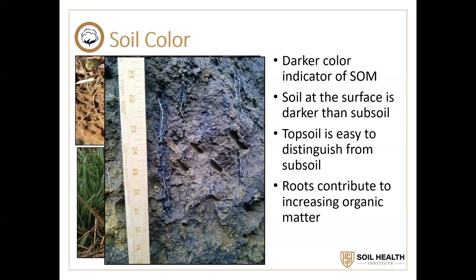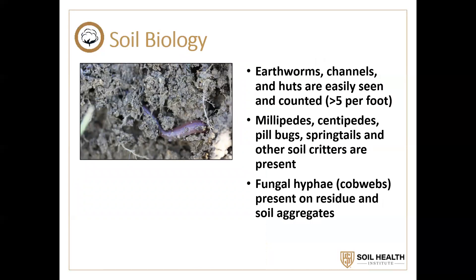We talk a lot about soil biology, and it's not by chance that whenever you see a picture of someone showing off their healthy soil field, you'll see earthworms. Earthworms are the first indicator — something you can see. Any healthy soil field should have anywhere from a million and a half to two million earthworms per acre — that's about five to eight per shovel full. In the right time of year, you'll see them. You'll see their casts, little middens on the soil surfaces. You should also see millipedes or centipedes, pill bugs, springtails, and other assorted soil creatures.